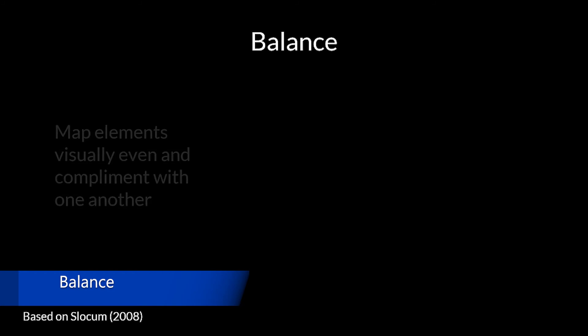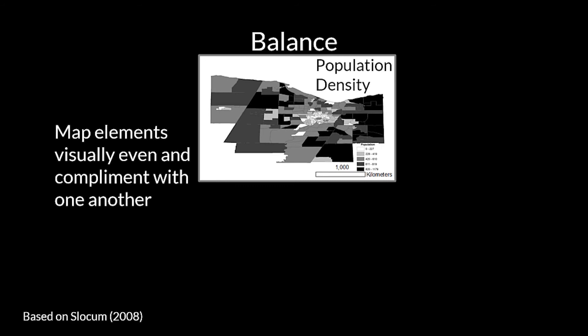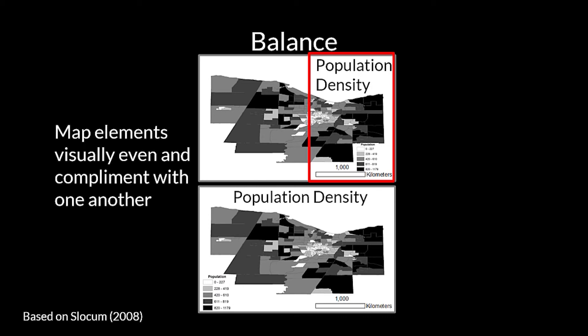Balance is the idea that elements on a map are visually even and complement one another. This is an example of a poorly balanced map — note how the map appears to be visually tilting to the right, as the title, legend, and scale bar are all on the right side. By comparison, this map has better visual balance, as the title has been centered over the mapped area, and the legend and scale bar balance one another out visually by being positioned on the bottom right and left. Next, I'll give you some ideas on how you can achieve good balance by examining available white space.